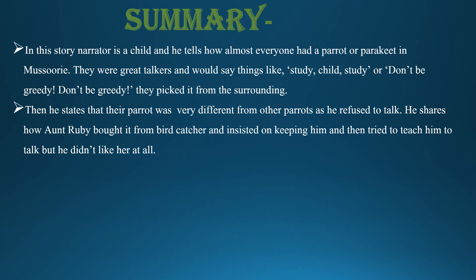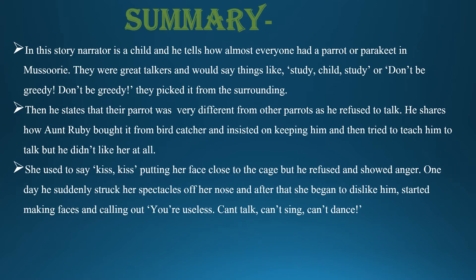Then he states that their parrot was very different from other parrots as he refused to talk. Refused means was not willing to. So their parrot would not talk. He shows how Aunt Ruby bought it from the bird catcher and insisted on keeping him and then tried to teach him to talk. But he did not like her at all.